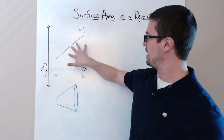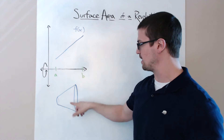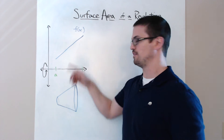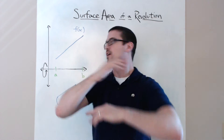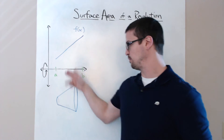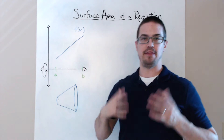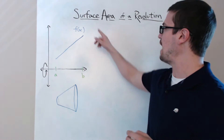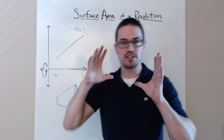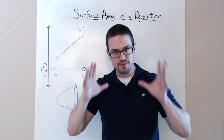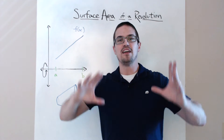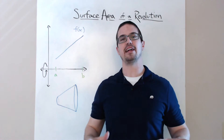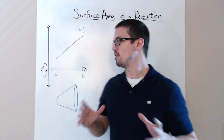In this case, since we have this linear f of x right here, it would form a shape that looks like this. If you can imagine it going around this axis, it would form that shape. We figured out the volume before; now we want to figure out the surface area. So this video is basically going to be breaking down the equation to get the surface area of a solid of revolution.